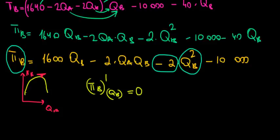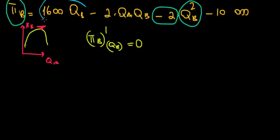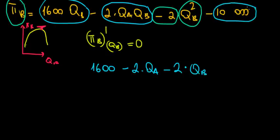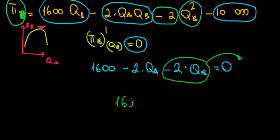Taking the derivative of the profit function with respect to QB and setting it equal to zero: the derivative gives 1600 minus 2QA minus 4QB equals zero. Note: the derivative of 2QB² with respect to QB is 4QB, not 2QB — I made a small mistake there. So we have 1600 minus 2QA equal to 4QB.